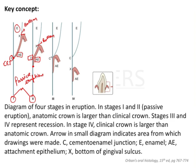Now comes Stage 3. In Stage 3, the bottom of the sulcus is at the CEJ, and the apical end of the attached epithelium has come down much further apical than the CEJ. You will still be able to see the enamel, but this is a pathological process and is generally considered recession. Stage 3 is basically a recession process.